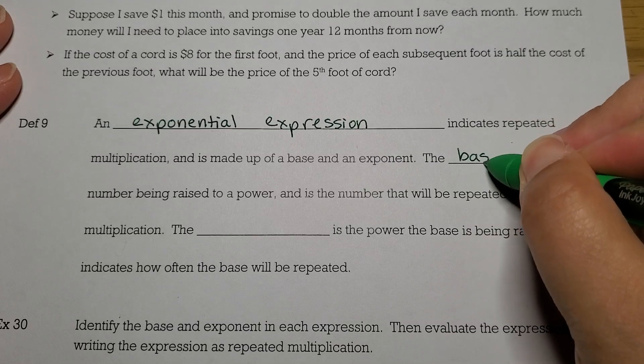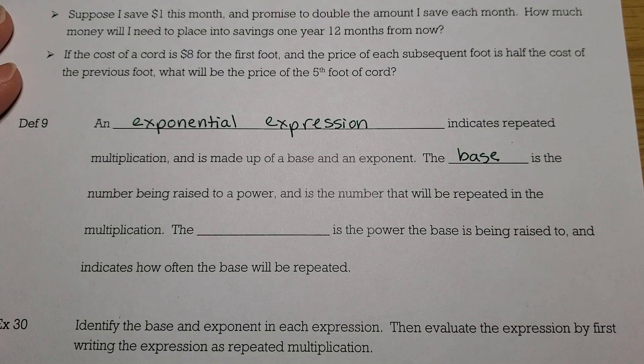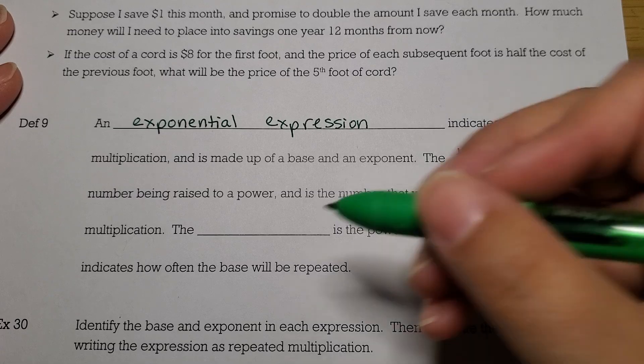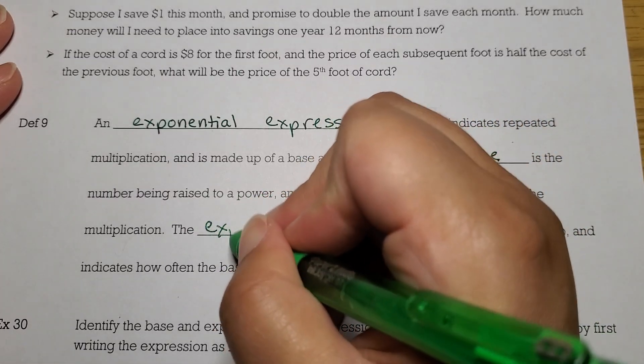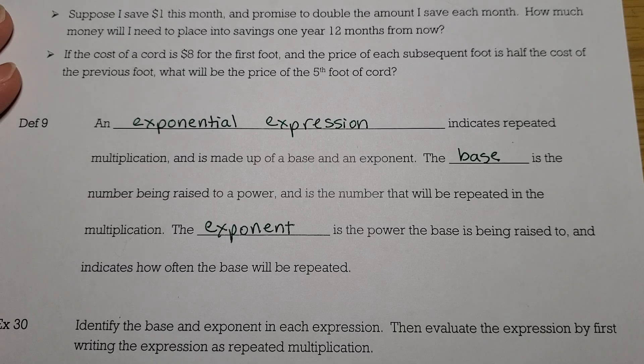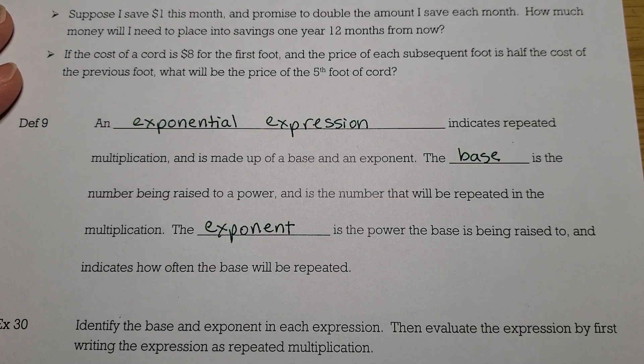The base is the number that's being raised to a power, and it's the number that you're going to repeat in the multiplication process. The exponent is the power that the base is being raised to, and that tells you how often the base is going to be repeated.